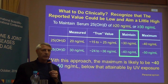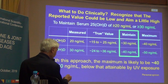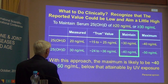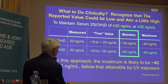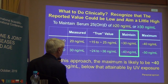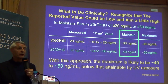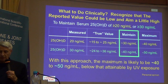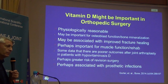So what to do clinically? If you're a believer in 20 nanograms per milliliter, recognize assay variability and shoot for 30. If you're a believer in 30, shoot for 40. That's not going to put you into the toxic range. For many patients, that means 1,000, 2,000, or 4,000 international units per day.